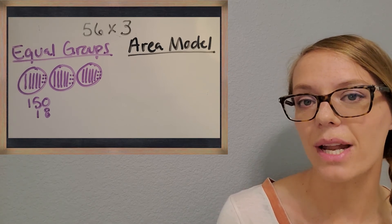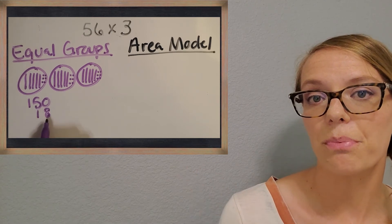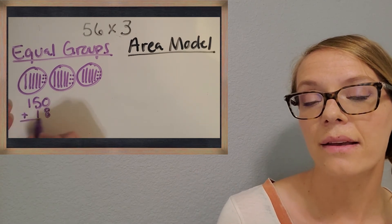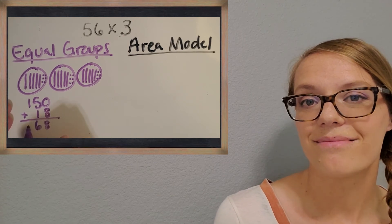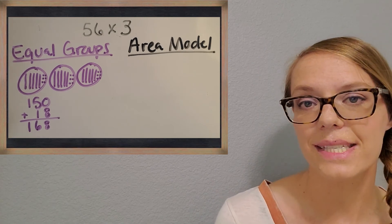We had those three groups of six dots, which equals 18. Let's write that one down too. And then what do we do to find the answer to this problem? Awesome. Just like last time, we're going to add up those two numbers. Make sure you've got them lined up by their place value before you add. And all right, let's see what we get. Awesome. 168.